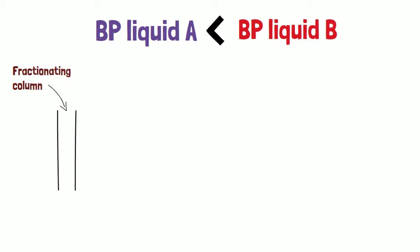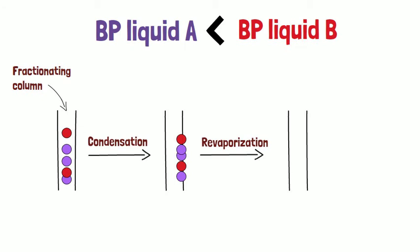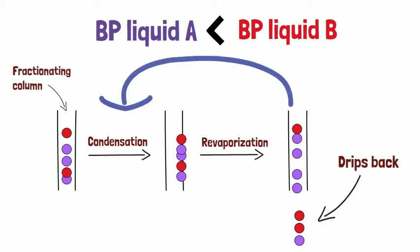The vapor going up is rich in liquid A but also includes vapors from liquid B. While ascending, the vapors encounter a cooler area in the column and condense. Some of the condensate revaporizes again, while some of it will drip back down. With each round of revaporization and condensation, the vapors become more rich in liquid A.